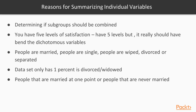Another example might be a marital status question where you want to compare different marital status groups — people that are married, people that are single, people that are divorced, widowed, or separated. Once you take a look at the numbers in those categories, if you see that only about 1% of your sample is divorced or 1% is widowed, you may want to combine some of those groups. For example, you could create a category of people that have been married at one point compared to people that have never been married.